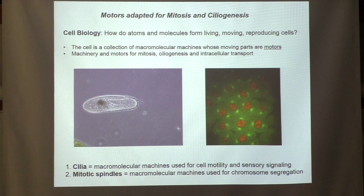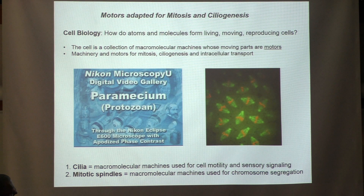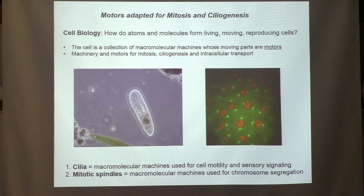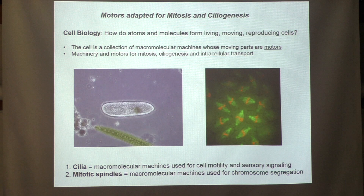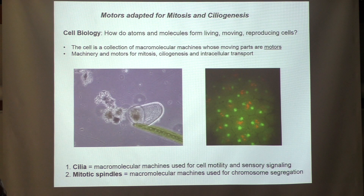The mitotic spindle machinery, shown here in a beautiful micrograph made by Ingrid in the lab — these are multiple mitotic spindles in a Drosophila embryo where spindle machinery is colored green and chromosomes are colored red — is used to segregate chromosomes, underlying the propagation of all life on Earth. All our work on motors stemmed from an early interest in understanding the mechanism of mitosis.